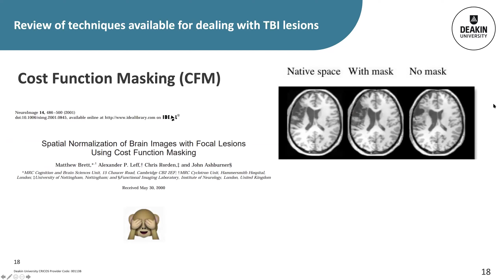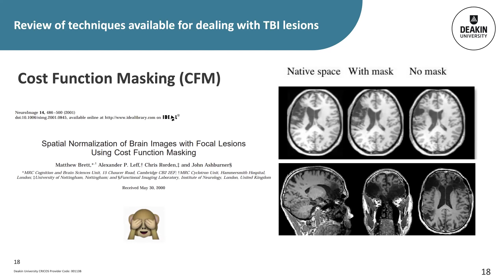Cost function masking (CFM) was one of the first attempts to improve registration accuracy in patients with focal lesions. CFM requires a mask of the lesion areas and uses it to tell the registration algorithm to ignore those regions when calculating the spatial transformation, basing registration only on healthy tissue and reducing the overall difference between source and target images. However, the accuracy of CFM reduces significantly when lesion size increases, as telling the algorithm to ignore all lesioned areas significantly reduces available data points for matching to the target image.